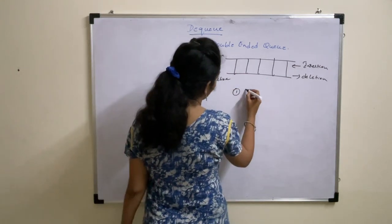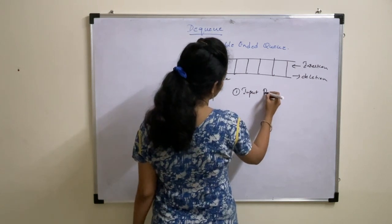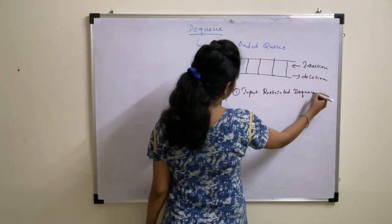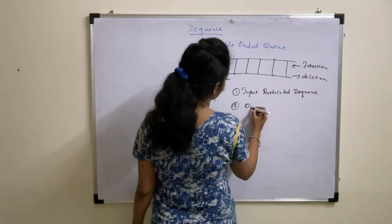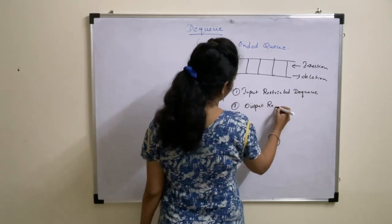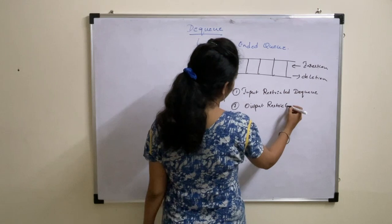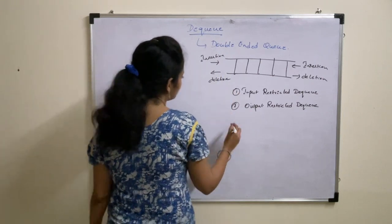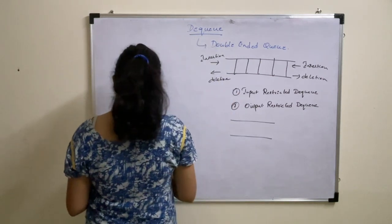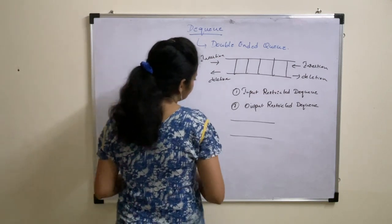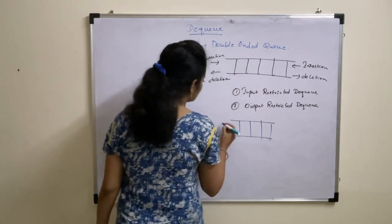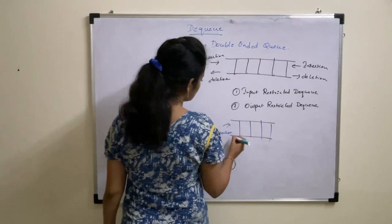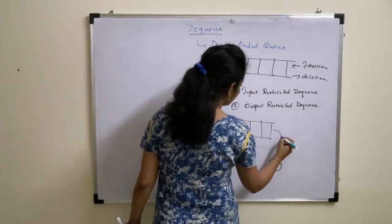The first type is input restricted DQ, and the second one is output restricted DQ. In input restricted DQ, insertion can be done only from one end, whereas deletion can be done from both ends.